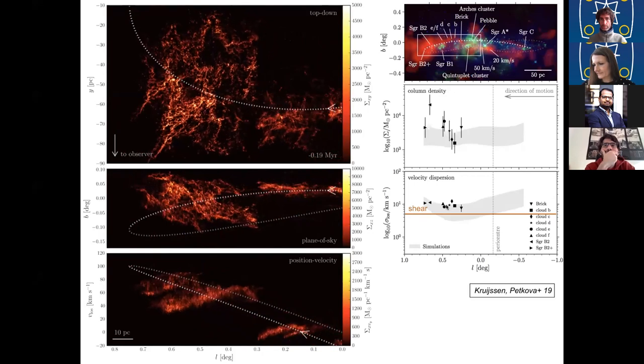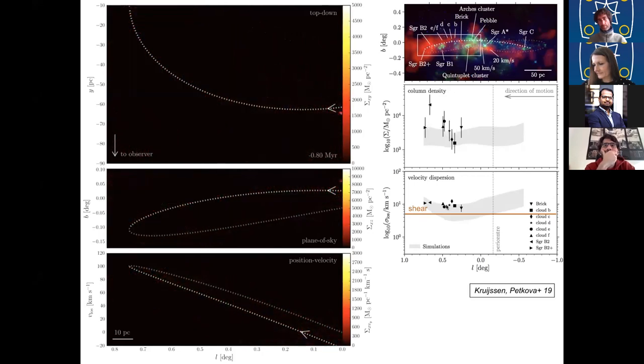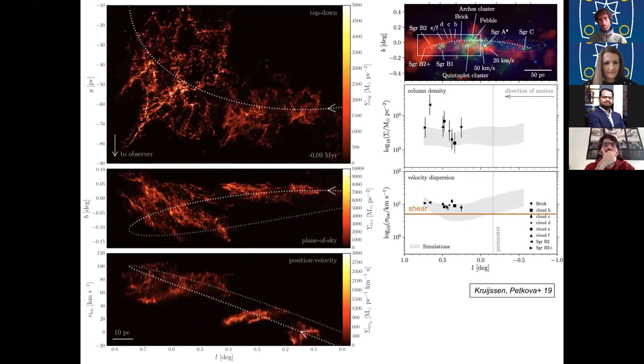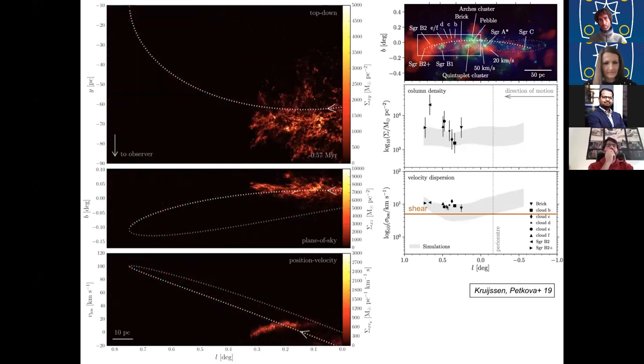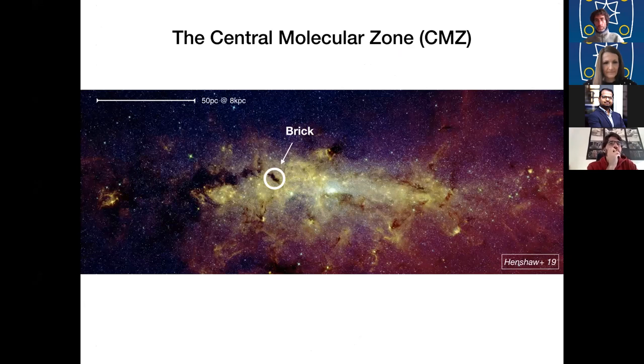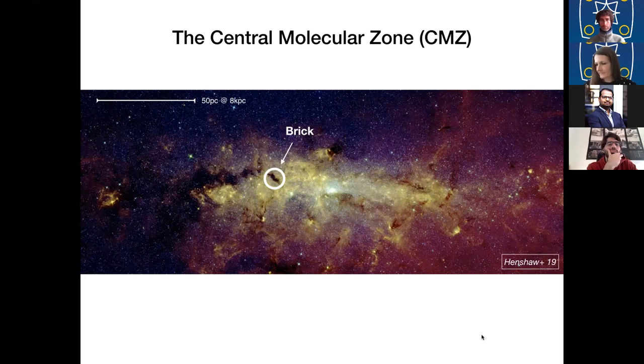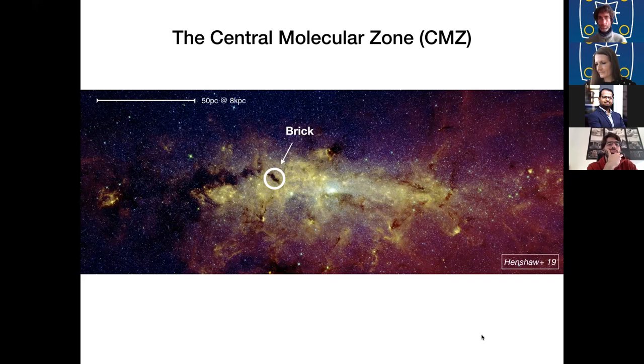But of course star formation happens on much smaller scales, and therefore we also need to see if the substructure within these clouds also matches what we see in observations. In order to look into that, we have selected just one of these CMZ clouds called the Brick. So it's the one over here in this circle. What is special about the Brick is that it is one of the densest and most quiescent clouds in the CMZ. It's really in this state of just about to start forming stars. So it's ideal for studying the properties of the gas before we need to worry about any stellar feedback or any such things.